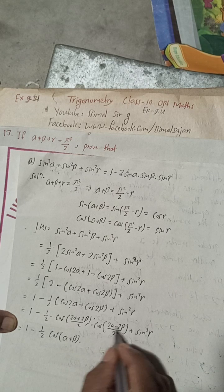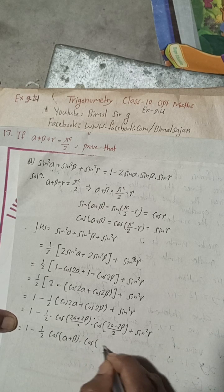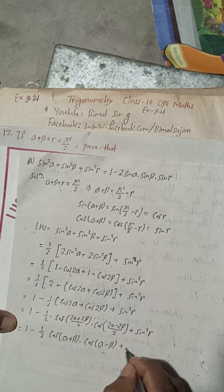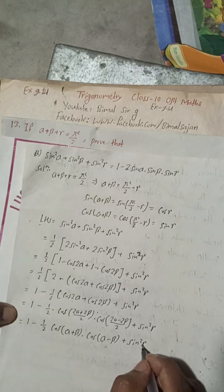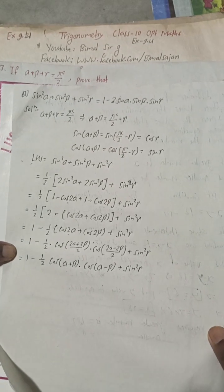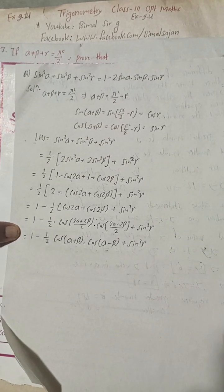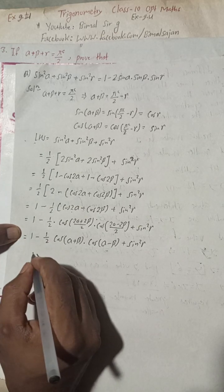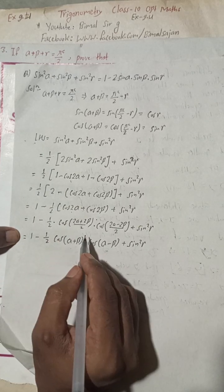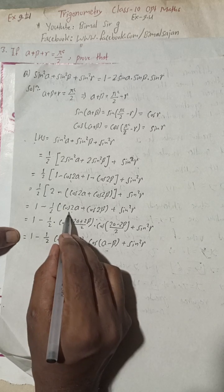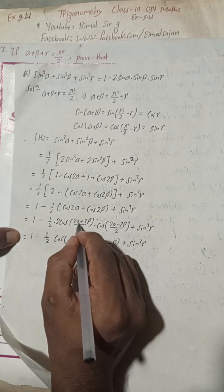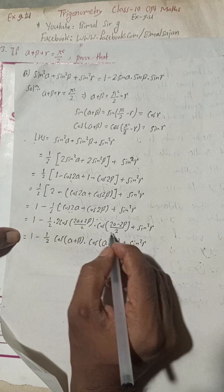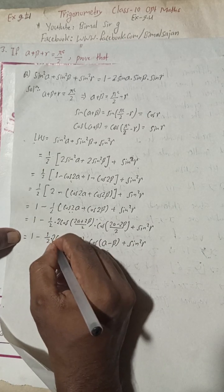Taking 2 common from both sides, the twos cancel, leaving cos(α − β). So the expression becomes 1 − (1/2)·2cos(α+β)·cos(α−β) + sin²γ, where the 2 cancels the (1/2), giving 1 − cos(α+β)·cos(α−β) + sin²γ.